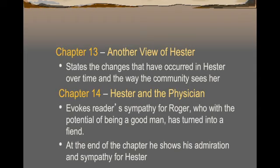In Chapter 14, we once again put Hester and Roger together, and we see a bit more sympathy toward Roger — that he still has the potential to be a good man. Hester reminds him what a good man he used to be and tells him to find the goodness in him once again. But he simply cannot — he's so stuck on his revenge against Arthur Dimmesdale. At the end of the chapter, he shows admiration and sympathy for Hester: 'At least you can overcome your sin,' he tells her. He himself, at least in Chapter 14, cannot.